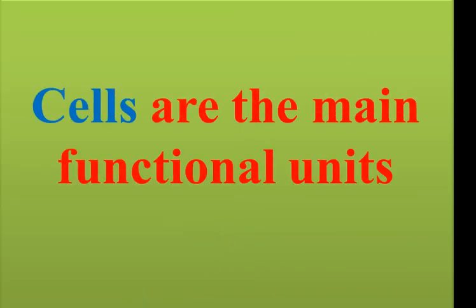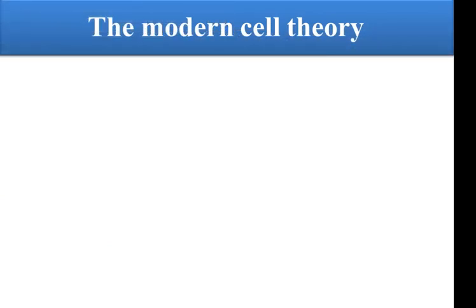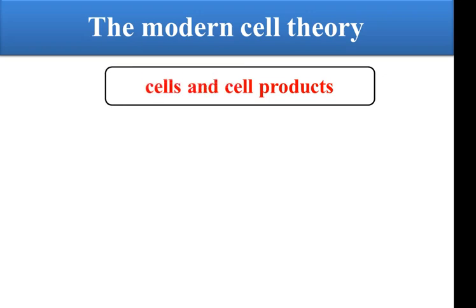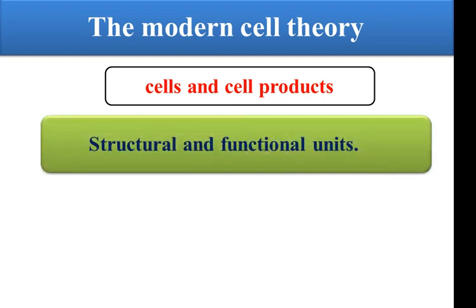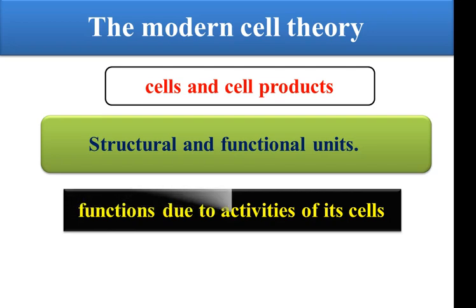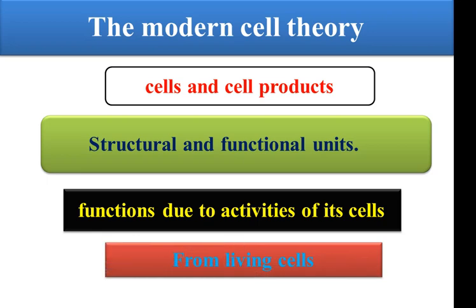We must know that the main functional unit in the human body is the cell, and we have the modern cell theory. This theory explains the real facts about living cells. The first fact is that living organisms are composed of cells and cell products. The structural and functional unit is the cell, and all activities and functions relate to cell function. Each cell comes from a living cell.